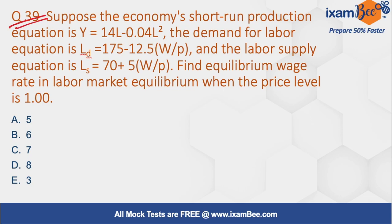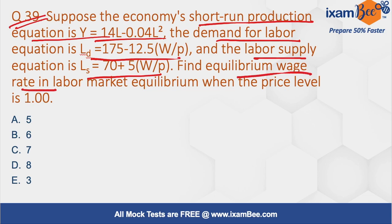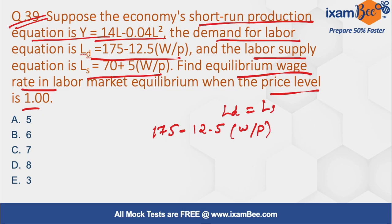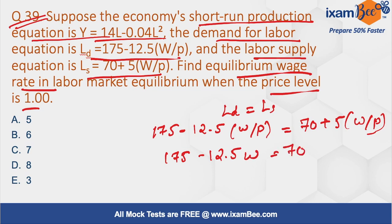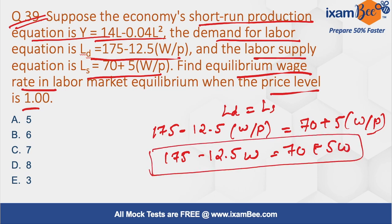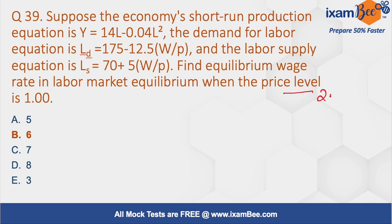Question number 39. A short-run production function is given along with a labor demand function and a labor supply function. We need to find the equilibrium wage rate at a given price level. At equilibrium, labor demand equals labor supply: 25 minus 12.5 W/P equals 70 plus 5 W/P. With P equal to 1, solving gives 175 minus 12.5W equals 70 plus 5W, so W equals 6. This question can be asked for two marks.